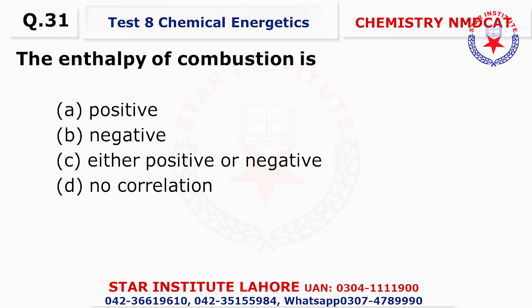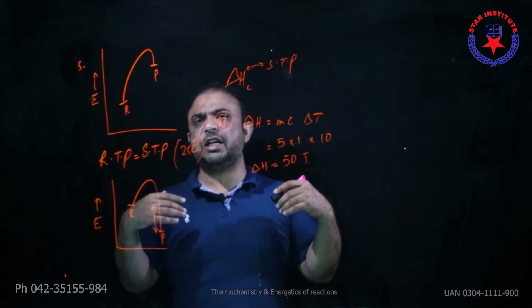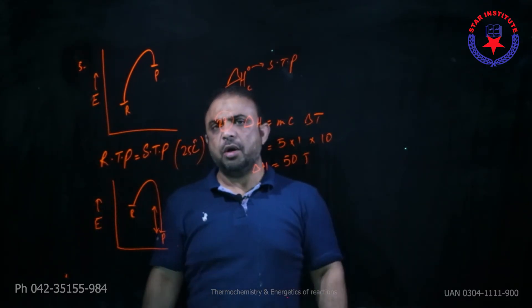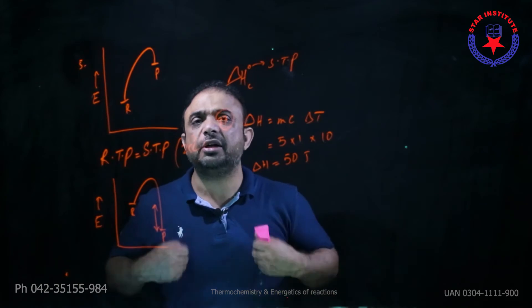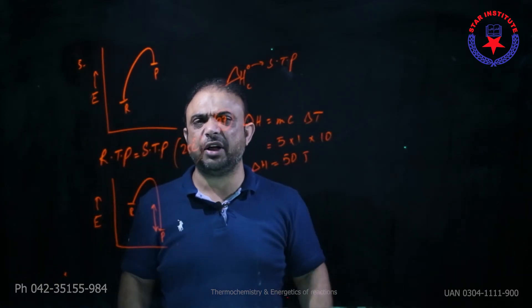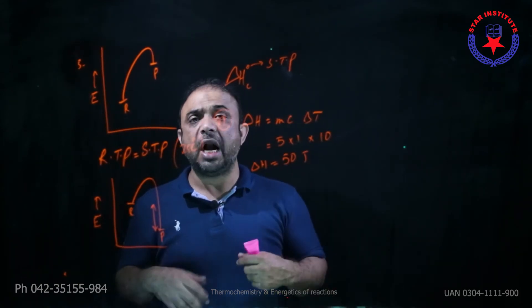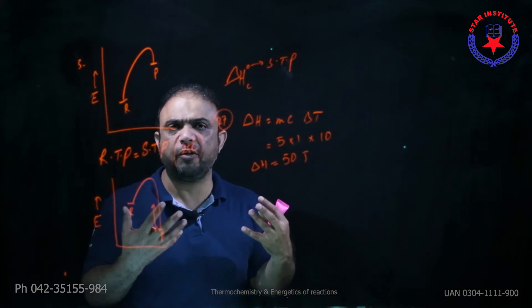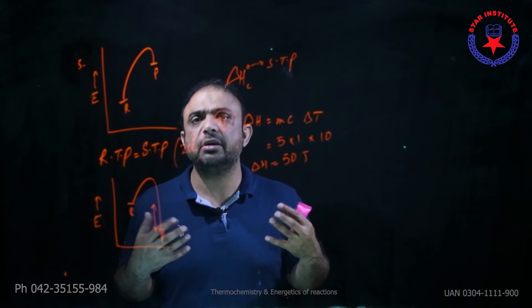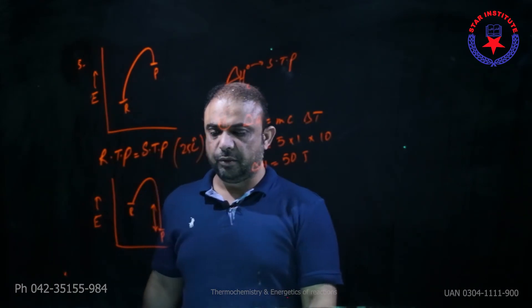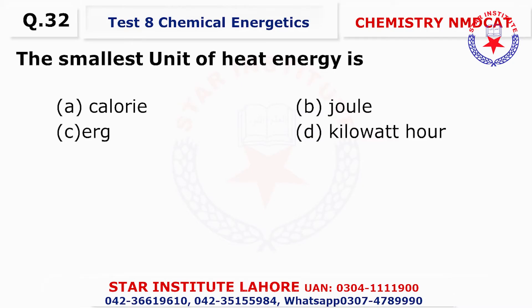Question number thirty-one: The enthalpy of combustion is always a negative value, because whenever combustion happens, a tremendous amount of energy is expelled out. We use this property of hydrocarbons to use them as fuel.